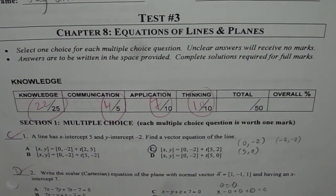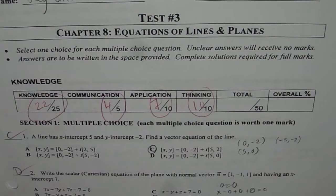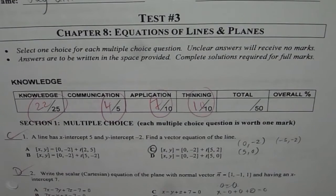Let's move on to the next question, which is: write the scalar or Cartesian equation of the plane with normal vector n as 1, minus 1, 1 and having x-intercept of 7. So you need to check out of these which one is the right choice.